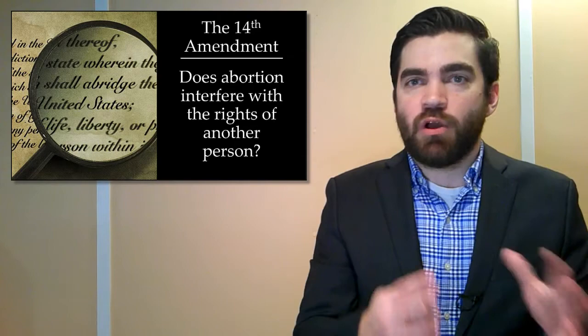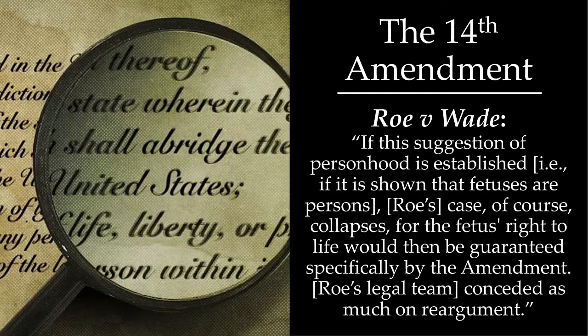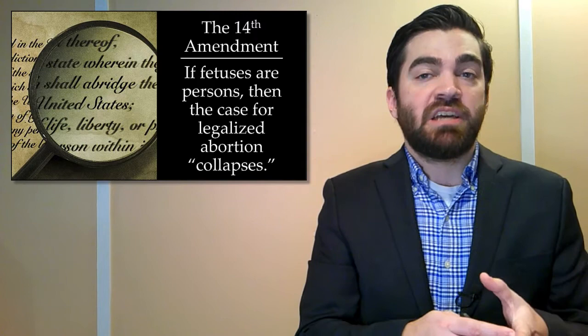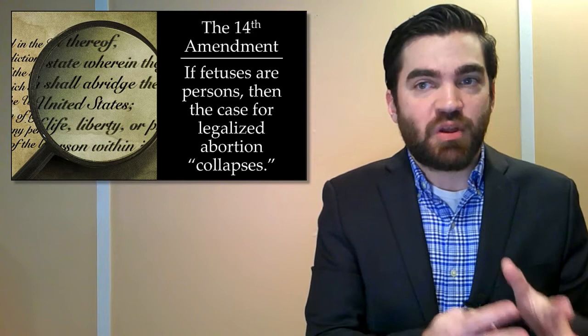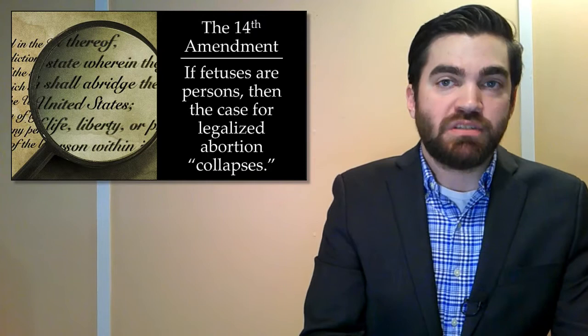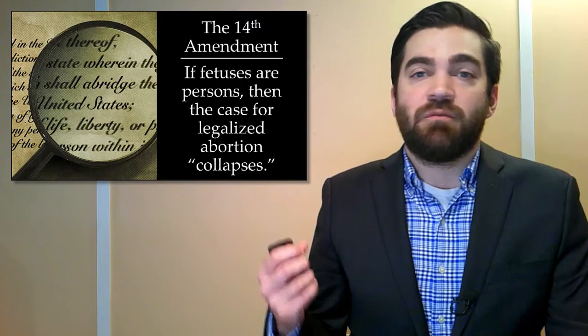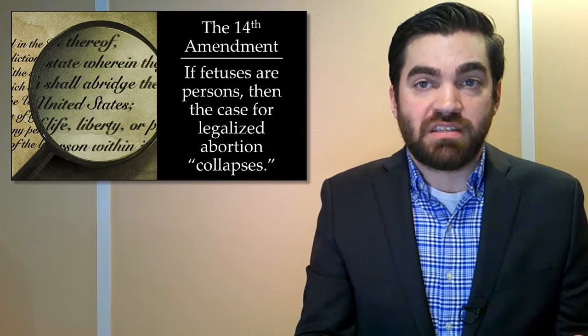Justice Blackmun, who wrote the decision in Roe v. Wade, says: 'If this suggestion of personhood is established' — that is, if it's shown that fetuses are persons — 'then Roe's case, the case for legalized abortion, collapses, for the fetus's right to life would then be guaranteed specifically by the amendment.' Roe's legal team conceded this on reargument. In other words, if unborn human beings are persons, then the entire case for legalized abortion falls apart. This means the court absolutely requires a commitment to the claim that fetuses are not persons — the whole case rests on that claim.